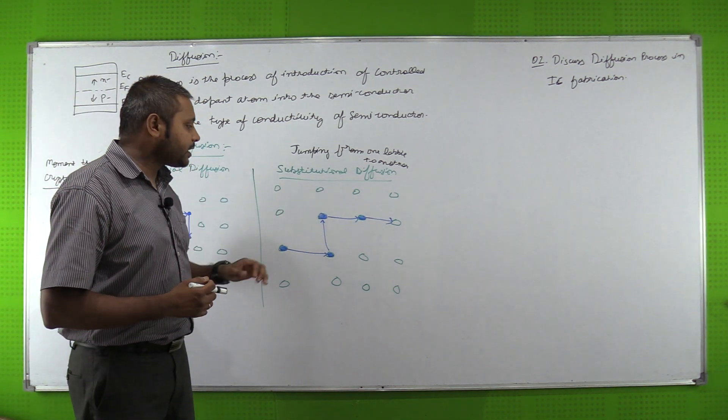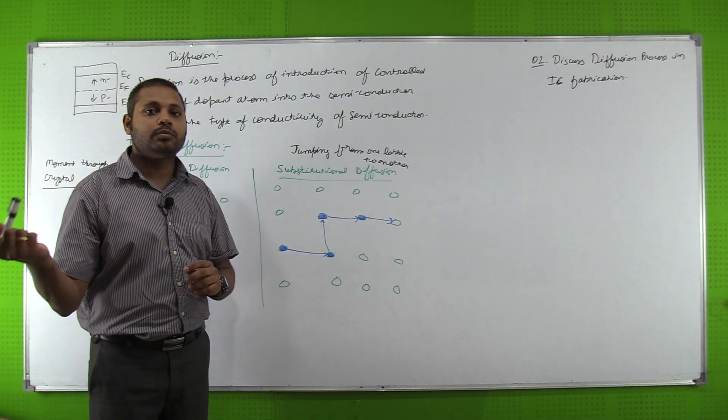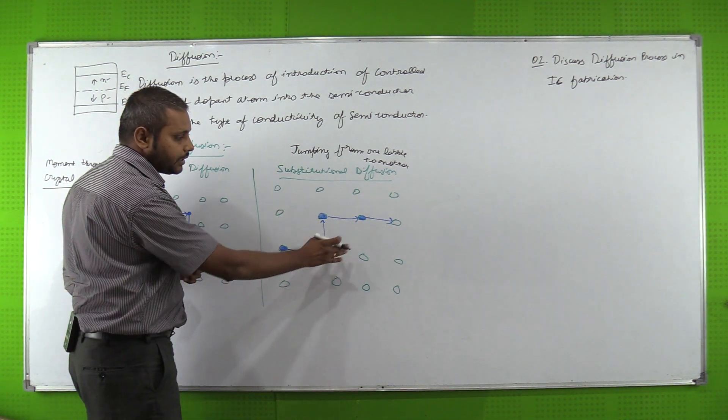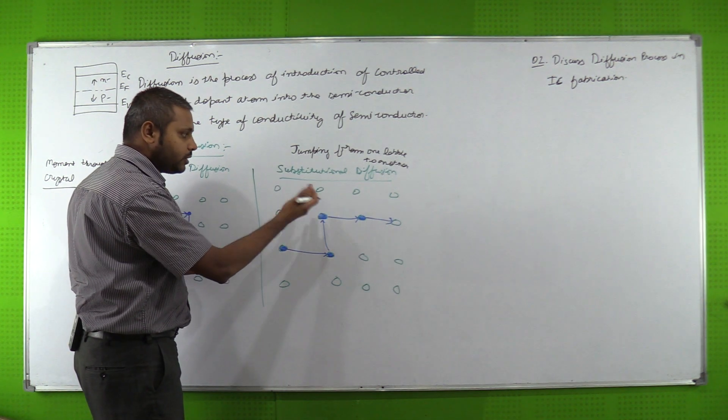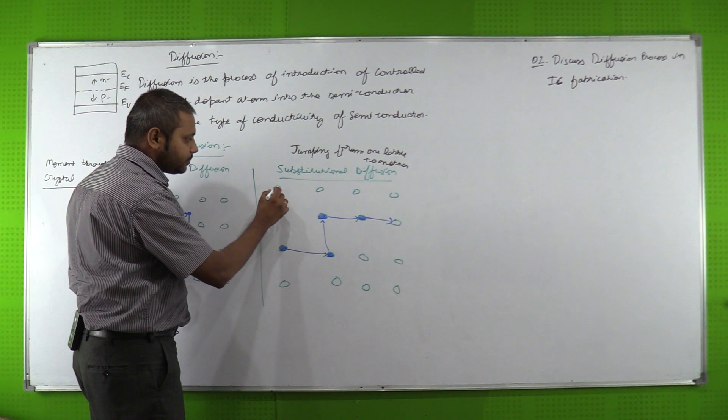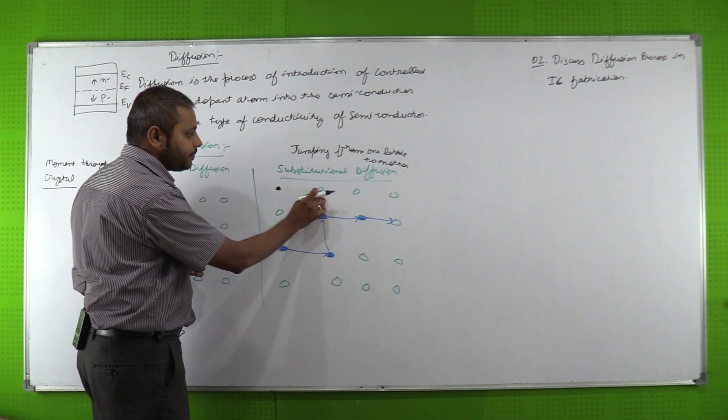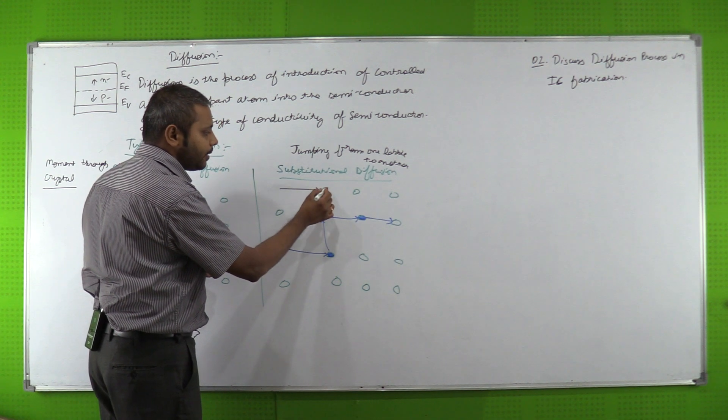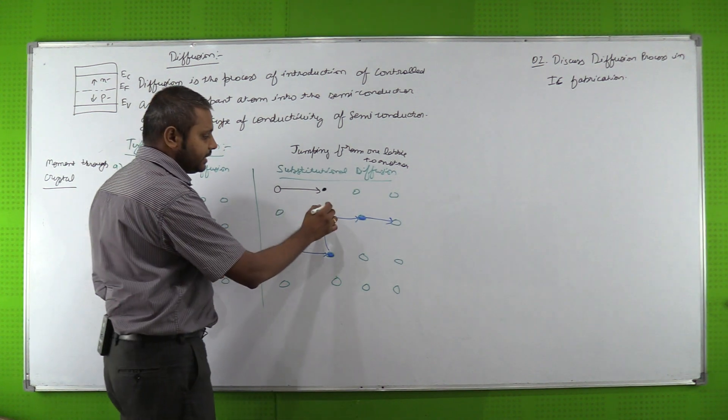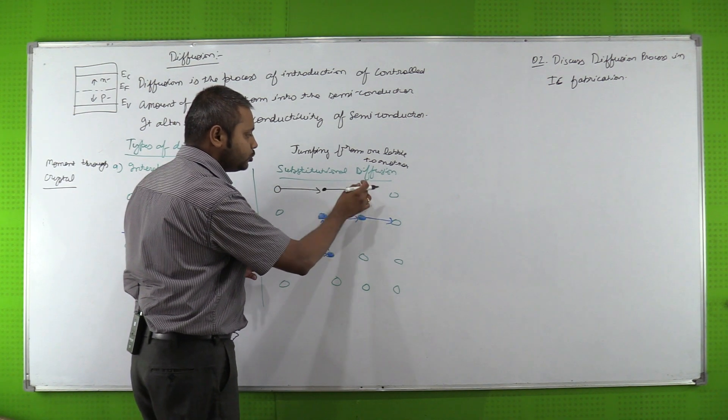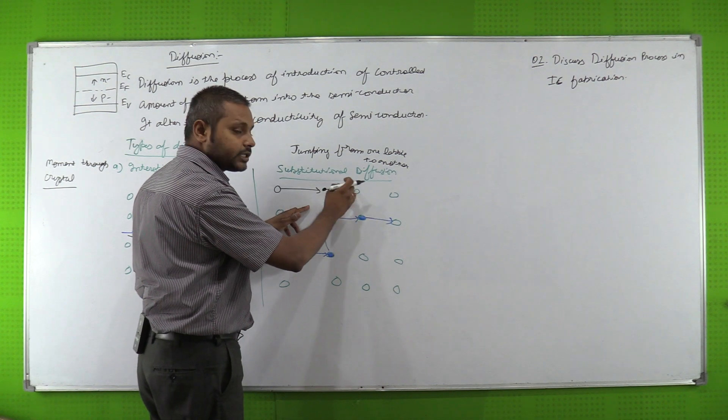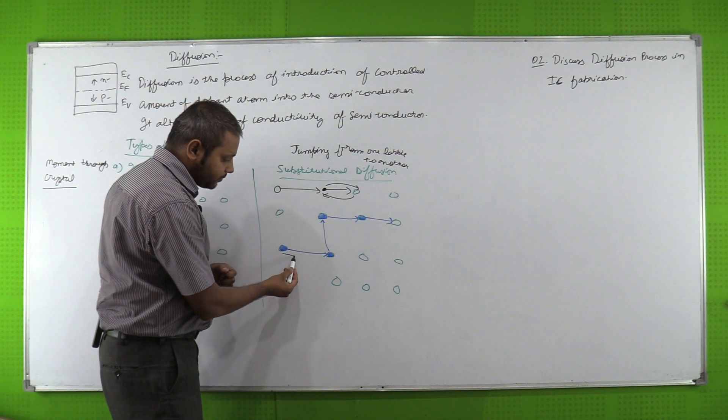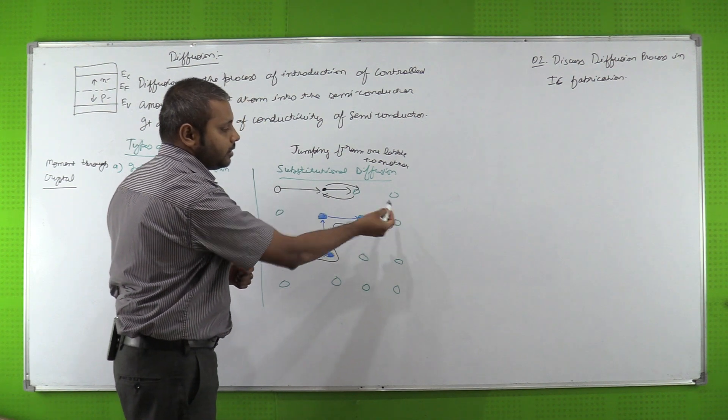Now the next one is substitutional diffusion. In substitutional diffusion what happens? A vacant space will be filled by the next dopant atom. Suppose for example, let us consider a diagram. I have dropped an example. Suppose this place is vacant, so dopant atom will occupy. Now in the next step this dopant atom will get shifted towards this and the lattice will come here. In this way it will move and the lattice will acquire its position. It will change. I have shown here this way it will show its movement and it will reach a particular position.